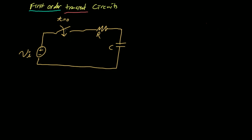What happens is this switch is going to close at T equals zero. Imagine that this circuit has been in the configuration with the switch open. When the switch is open, current is not going to flow through the circuit. No current is allowed to flow through either the capacitor or the resistor, so we're going to have a voltage of zero across each of these two elements.